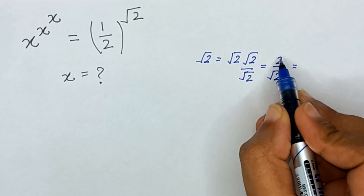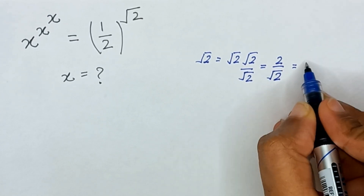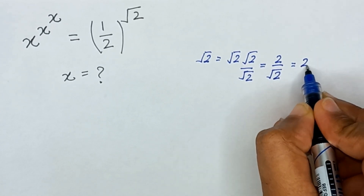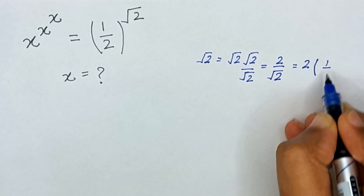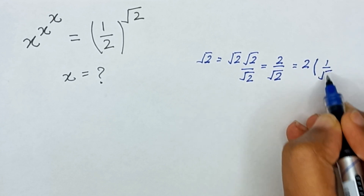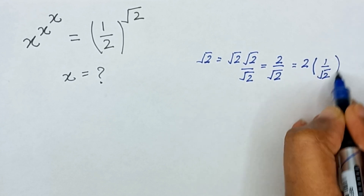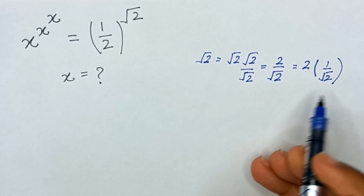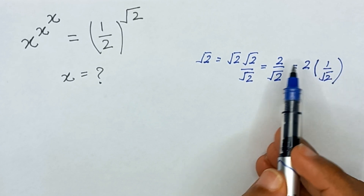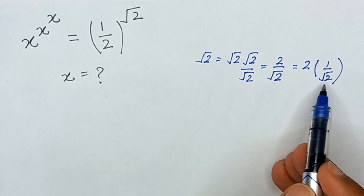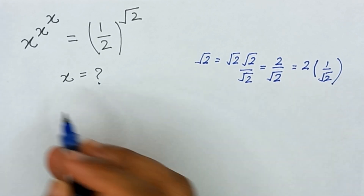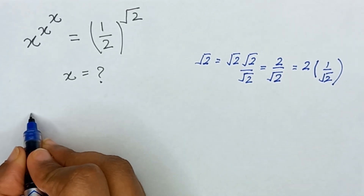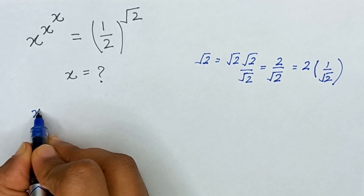I can also write 2 divided by square root of 2 as 2 times 1 divided by square root of 2. Now I will replace square root of 2 with 2 times 1 divided by square root of 2 here.